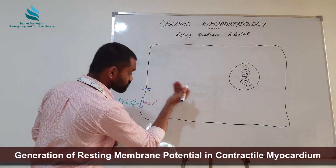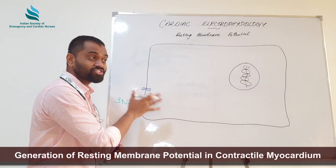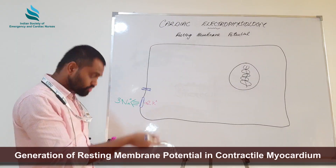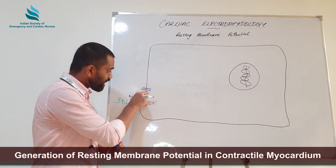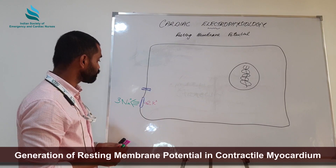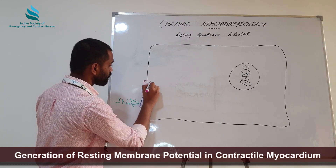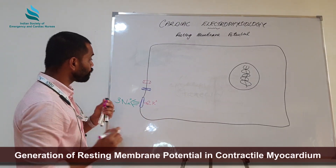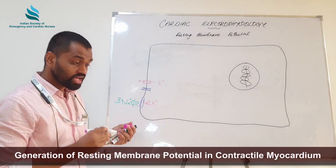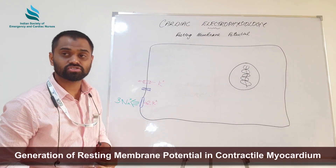Inside the cell, there is also a higher concentration of potassium. Contrary to sodium, the ion channels for potassium are not closed — they are open. So potassium will leak through these open ion channels and slowly migrate out to the extracellular space.